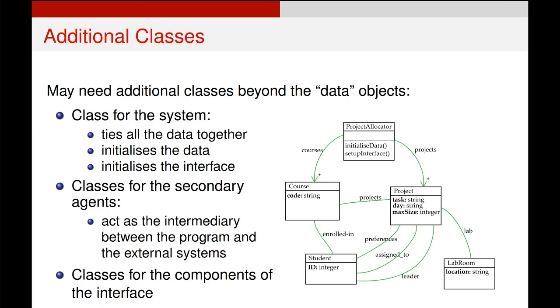The simplest example is usually a system class that ties all the data together, initializes any data we need, and initializes the interface. What we've done here is created a super class called ProjectAllocator. It has a couple of methods, no attributes of its own, and only unidirectional relationships to other objects. From this ProjectAllocator we can have as many courses and projects as we want.